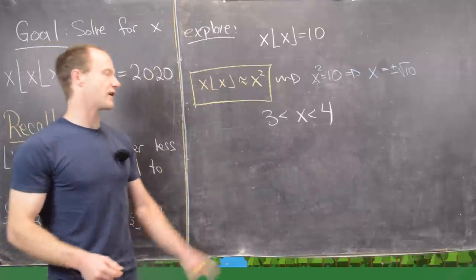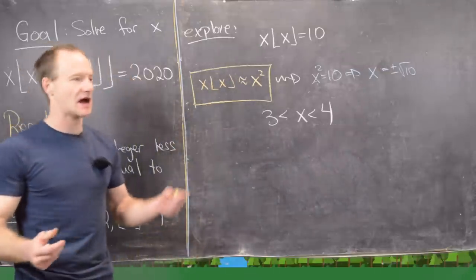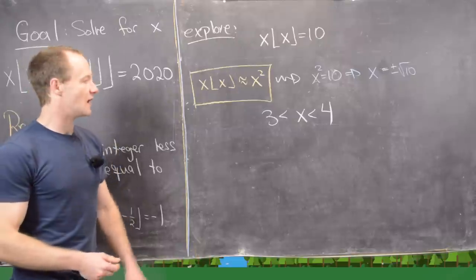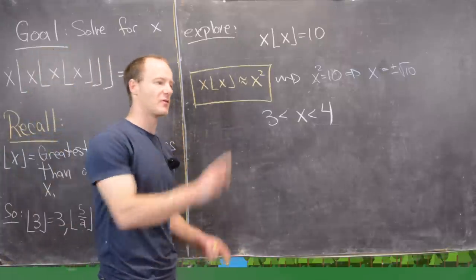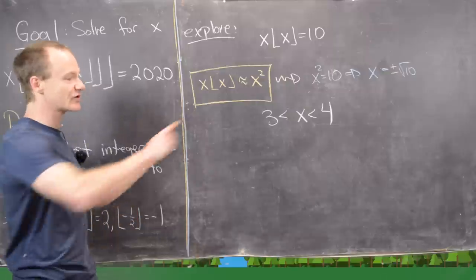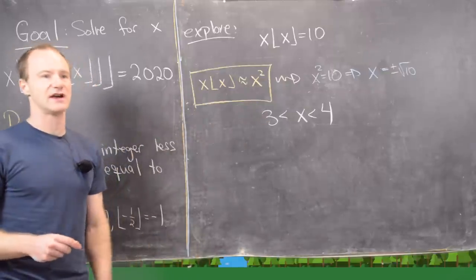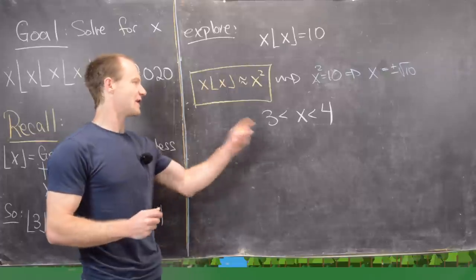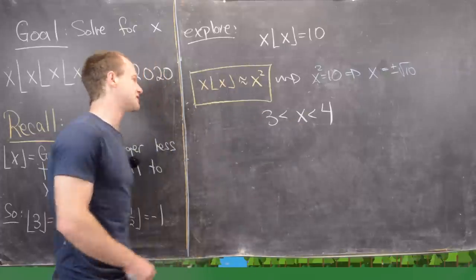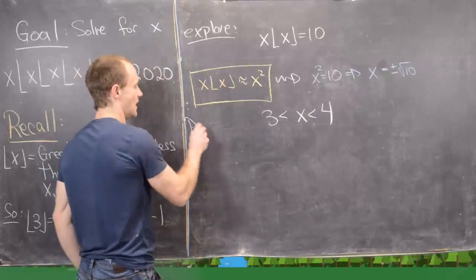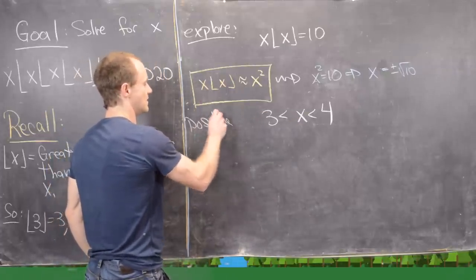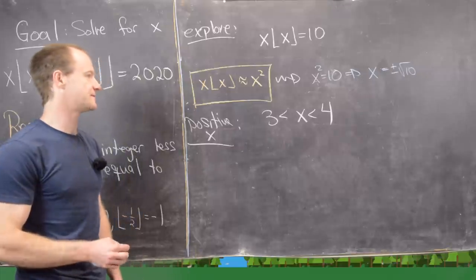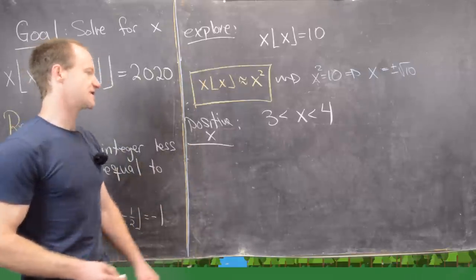So x is going to be between 3 and 4. We know it can't be 3 because plugging 3 in gives 9, and it can't be 4 because that gives 16. Furthermore, this is an increasing function for positive values of x and a decreasing function for negative values of x, so for positive values of x this is the only region where a solution could exist.